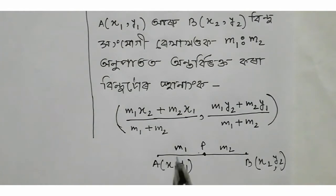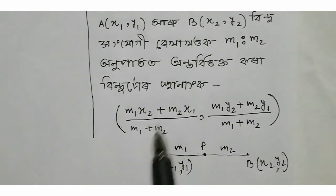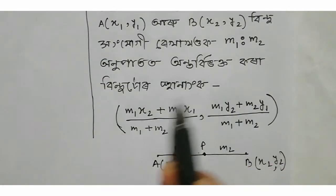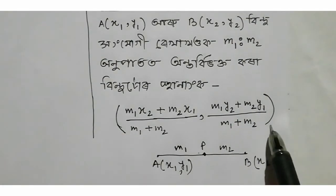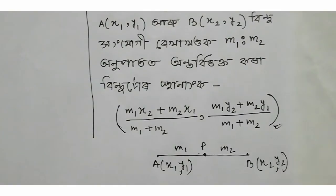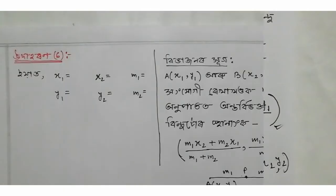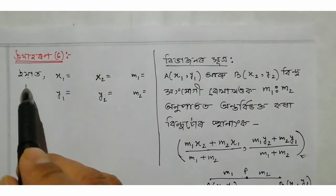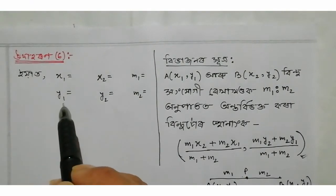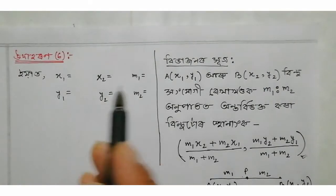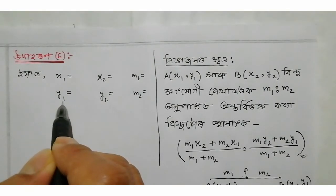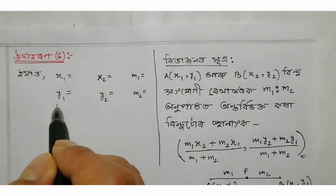We have a P-bindu (point P) to return to. This is the first one, and this is the second one. Students, I am going to start with x1, y1 and x2, y2 and M1, M2.